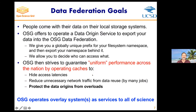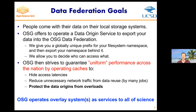Our job is to make data accessible to the compute federation via the data federation. How does it work? People come with their data on their local storage system and we export it into the federation. OSG offers to operate the data origin service. OSG strives to guarantee uniform performance across the nation by operating caches. This is really about providing access to the compute federation, and it has three goals.